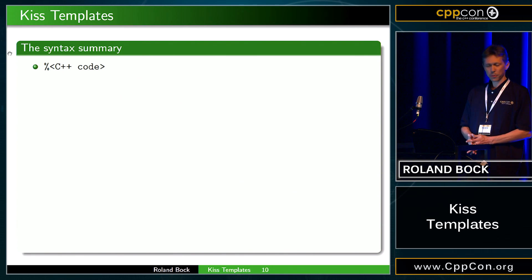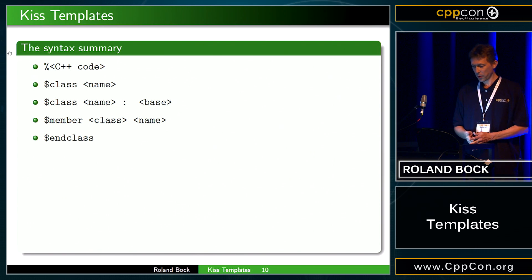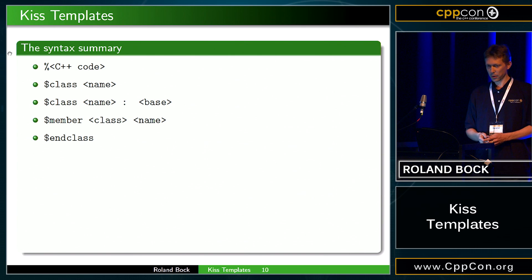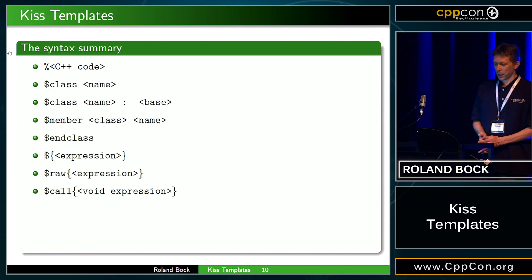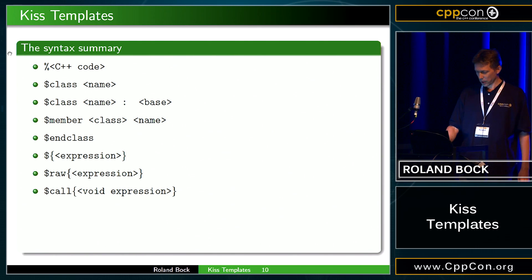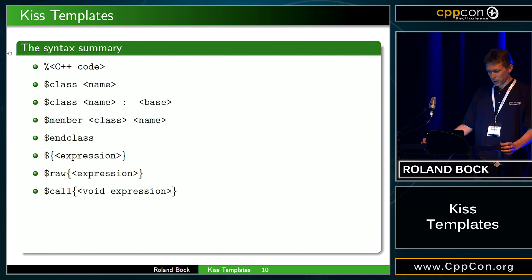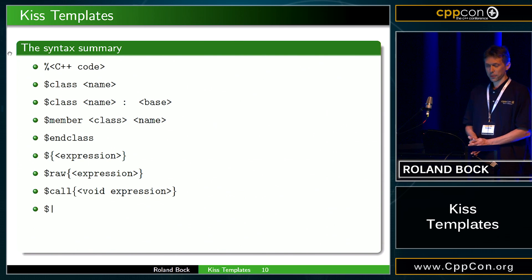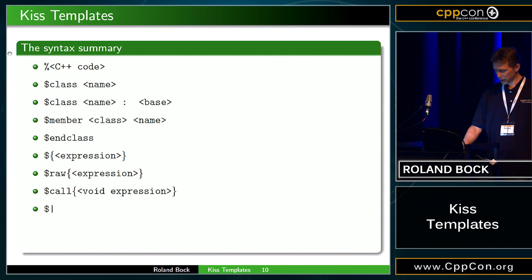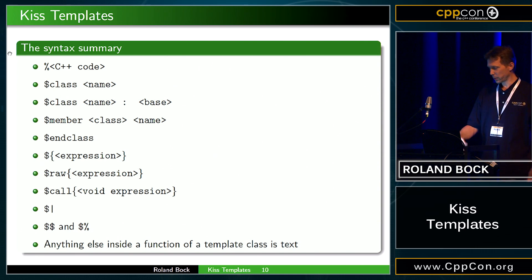The whole syntax of this template library fits in one slide. We have C++ code, we have these classes which basically represent the templates, classes with inheritance if you want that, and you can compose them so you can add other templates as members. We have the end-class to mark the end of the template. We have expressions that are escaped, which is mostly what you want. You can also send data in a raw format to the serializer. You can call other functions of your template, which typically are void expressions. Then you have markers for trimming left or right depending on where you position them, escape sequences for special characters, and anything else inside a function is text — which is very useful because it makes things more readable.